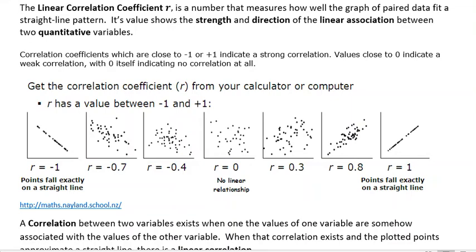Hi, it's Carly McEvoy. The linear correlation coefficient R is a number that measures how well the graph of paired data fits a straight line pattern. Its value shows the strength and direction of the linear association between two quantitative variables.